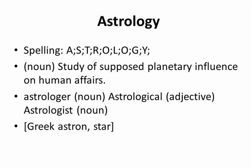Astrology. Spelling: A-S-T-R-O-L-O-G-Y. Noun. Study of supposed planetary influence on human affairs. Astrologer (noun). Astrological (adjective). Astrologist (noun). From Greek 'astron': star.